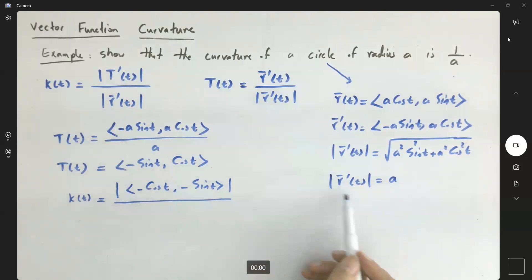But we know that the magnitude of R prime is A. So the curvature becomes, here you have the square root of cosine squared plus sine squared divided by A, which is 1 over A.